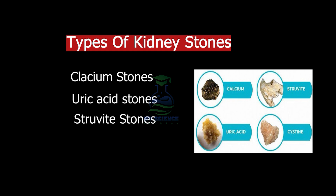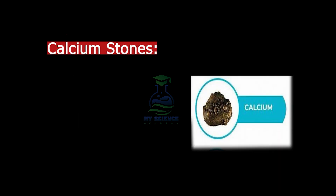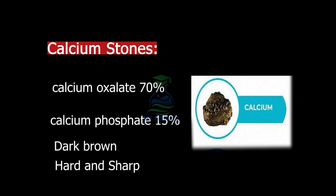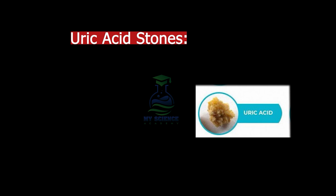There are various types of kidney stones: calcium stones, uric acid stones, struvite stones, or cysteine stones. The incidence of calcium oxalate stones is 70% and calcium phosphate is 15%. They are dark brown in color, hard, and sharp. Uric acid stones have an incidence of 10%.